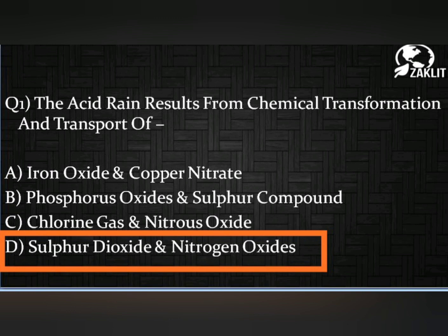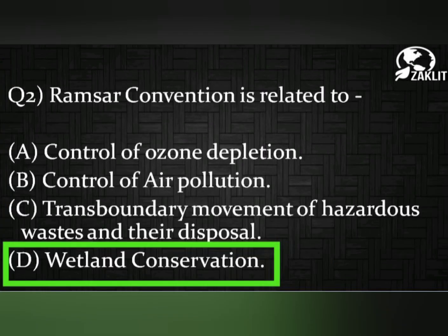The second question was: the Ramsar Convention is related to which of the following? The correct option is option D: wetland conservation. This was signed by UNESCO in Ramsar, Iran in 1971 for sustainable usage of wetlands throughout the world, and it came into action in 1975.